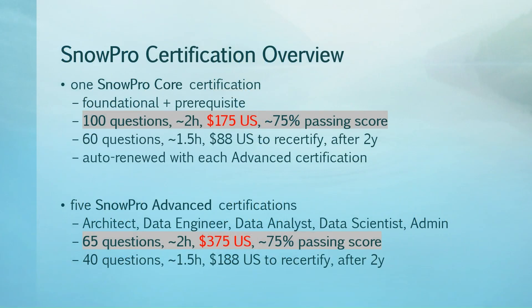The Snowpro certification overview. We have one Snowpro Core certification, foundational and prerequisite for all the others. If you go for the first time into such an exam, you'll have 100 questions in around two hours for $175 U.S. The passing score is around 75%. All the exams last for two years.